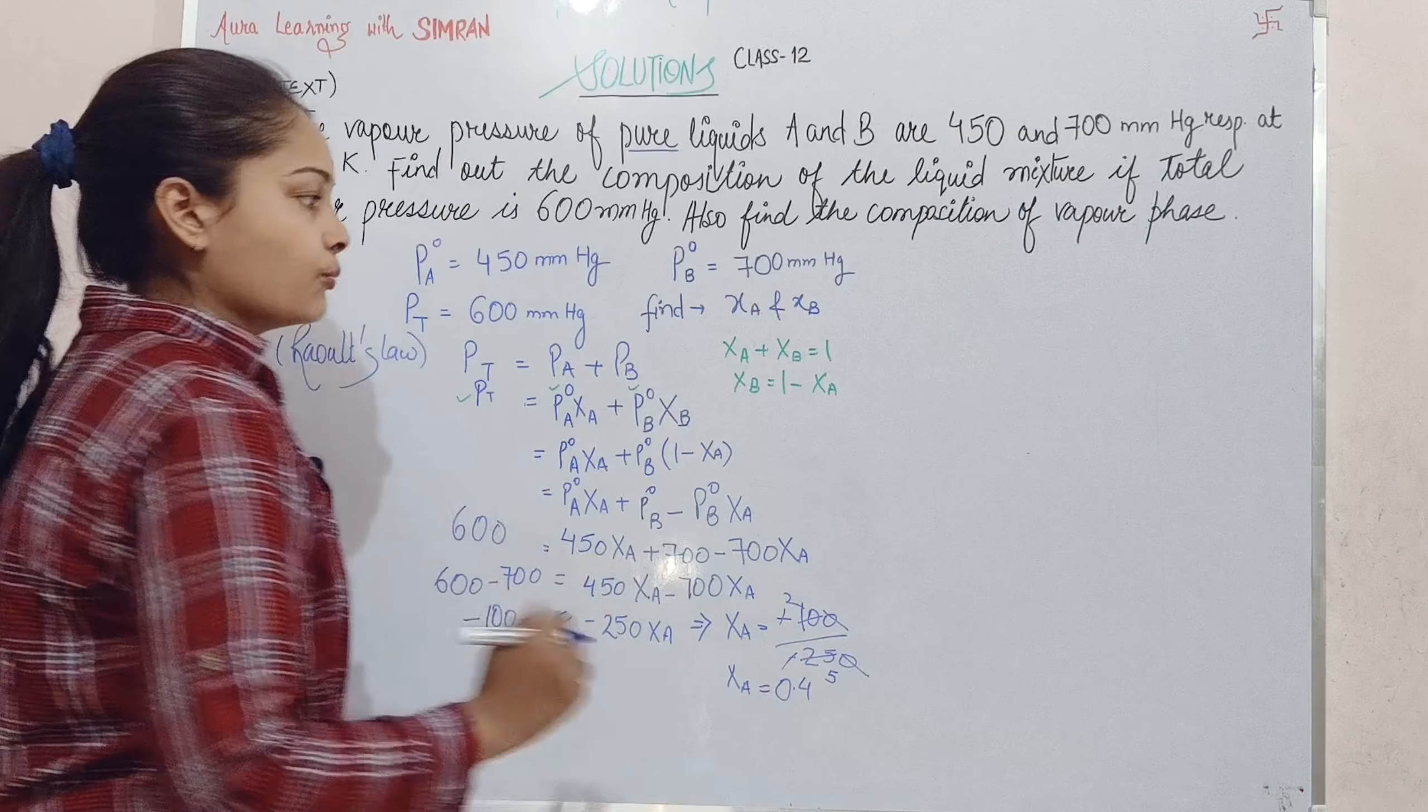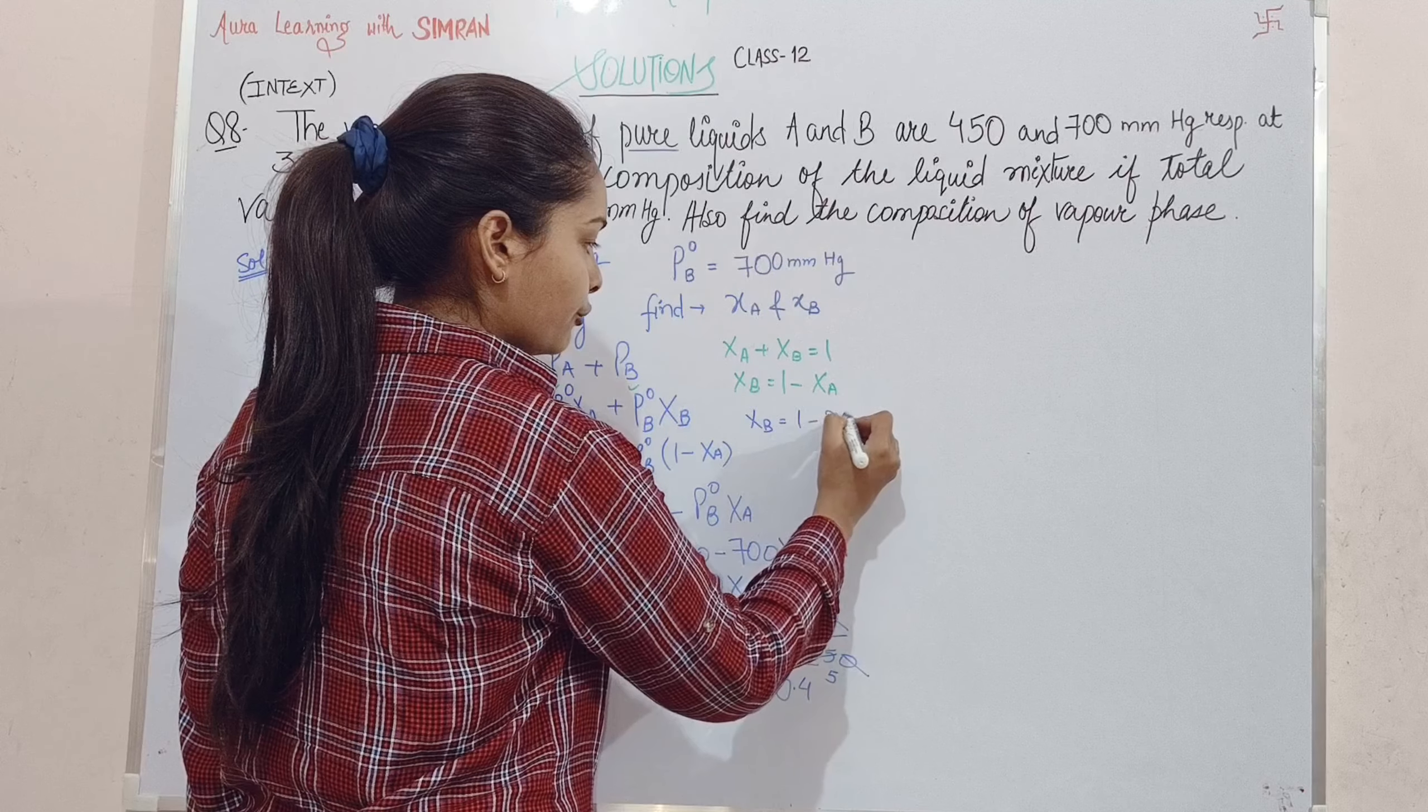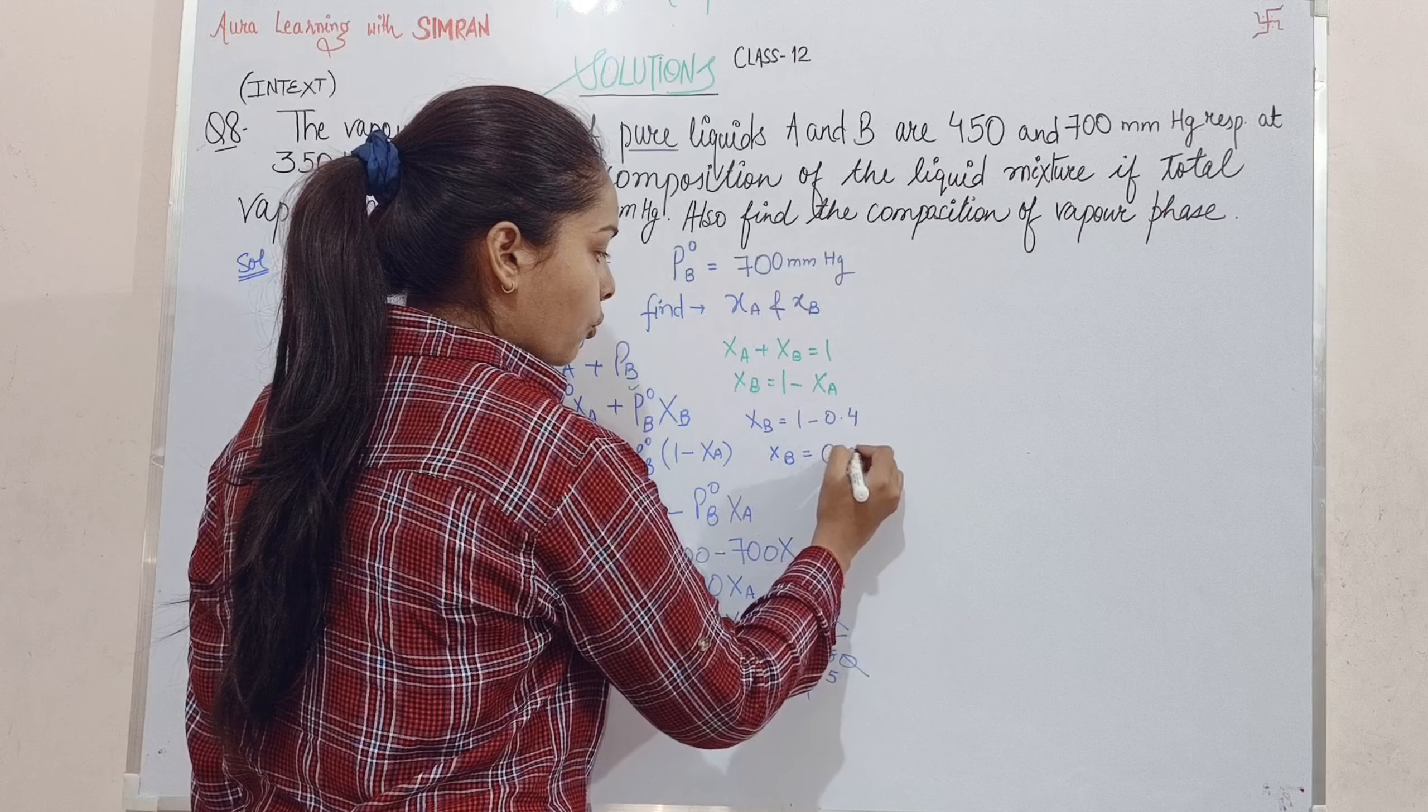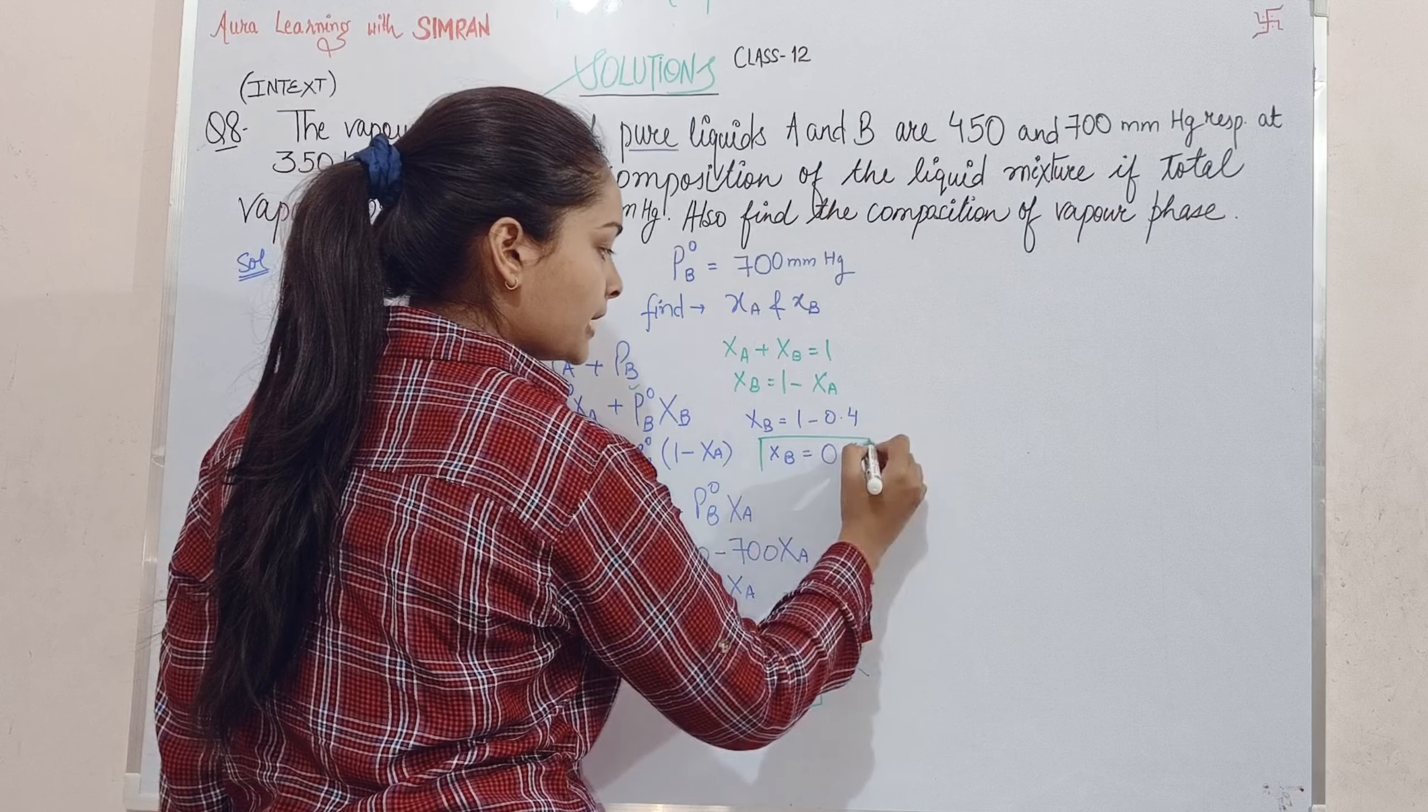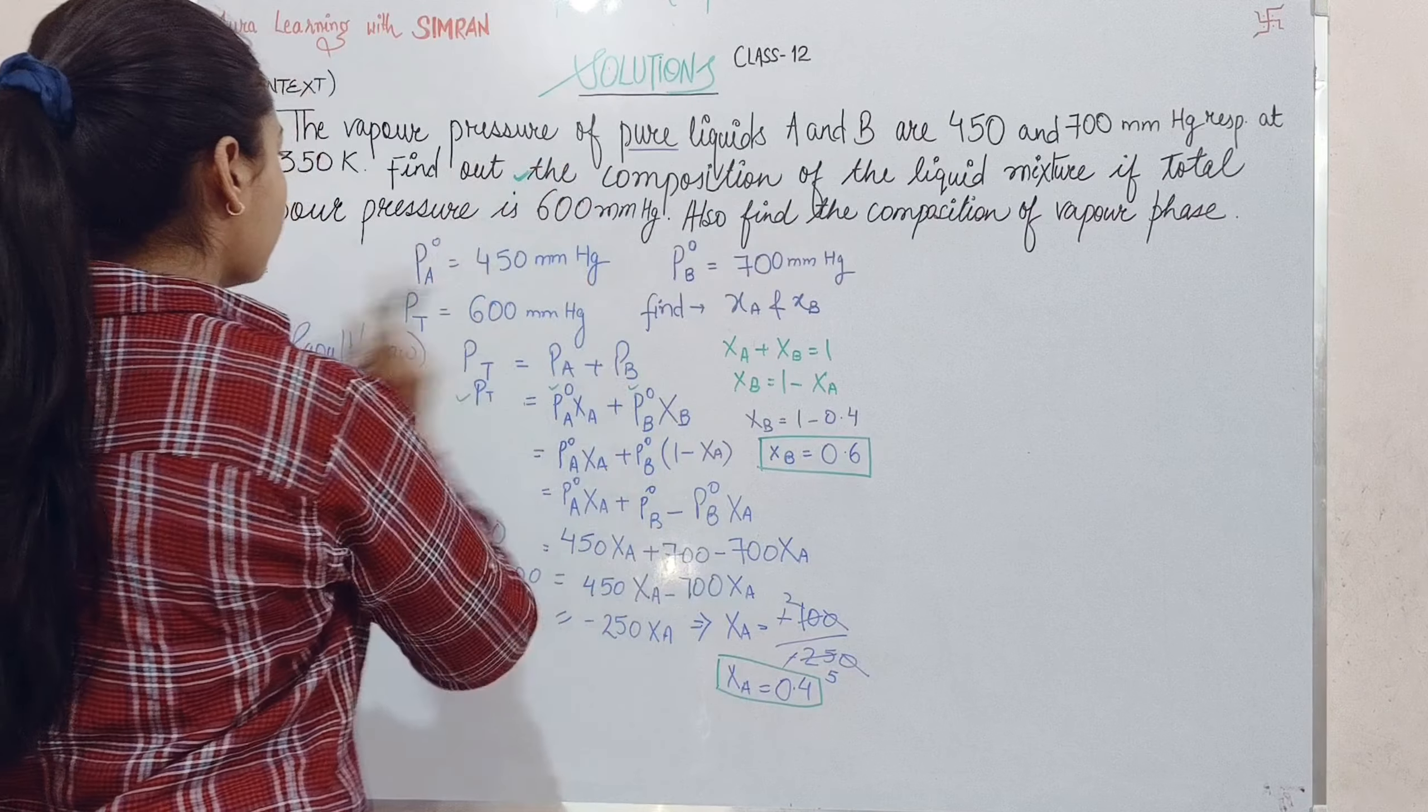χB equals 1 minus 0.4, so χB equals 0.6. First part complete.